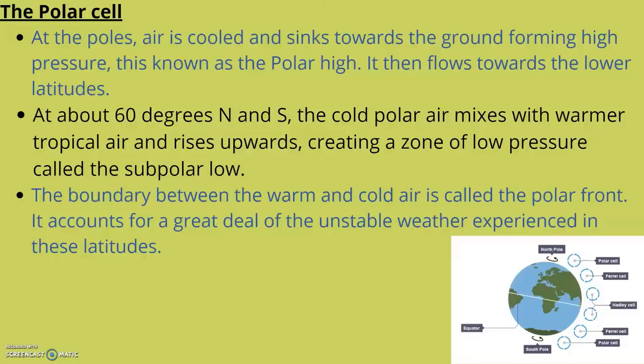At about 60 degrees north and south, the cold polar air mixes with warm tropical air and rises upwards, creating a zone of low pressure called the subpolar low. The boundary between the warm and cold air is called the polar front. It accounts for a great deal of the unstable weather experienced in these latitudes.